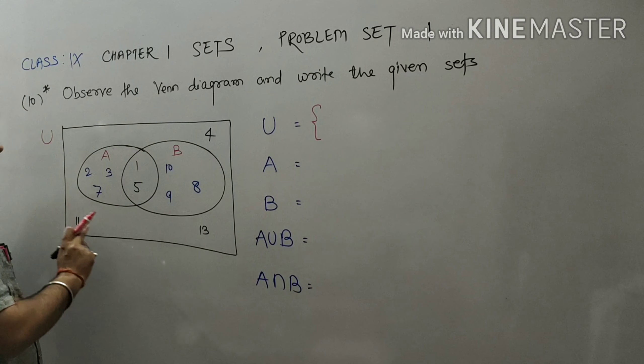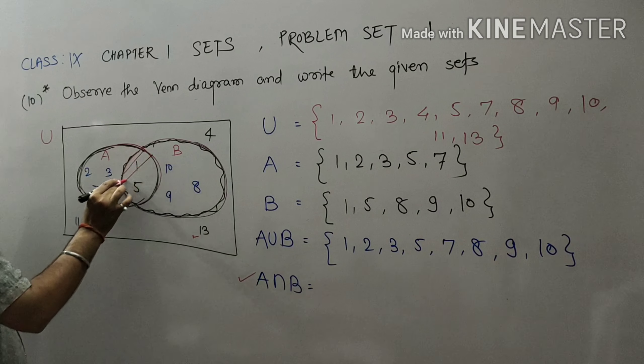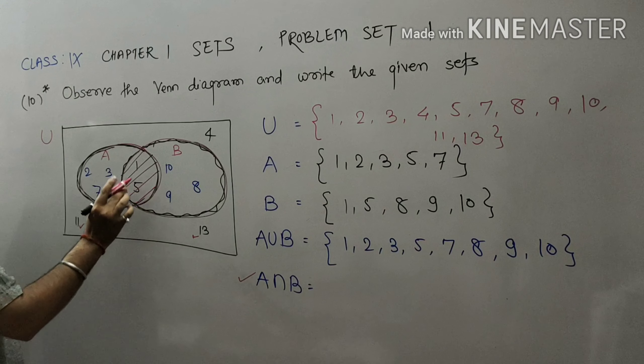Now students, we will find A union B. A union B is what, students? You will write all the elements of set A and set B without repetition.